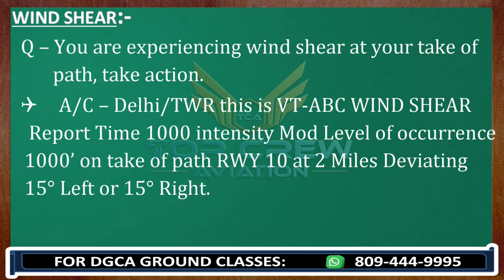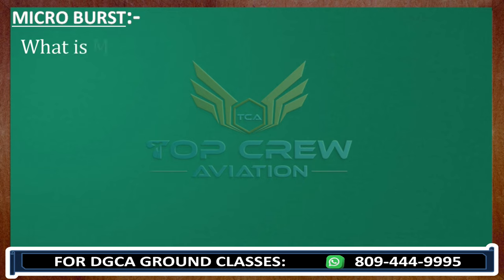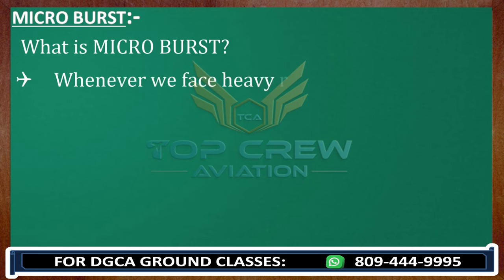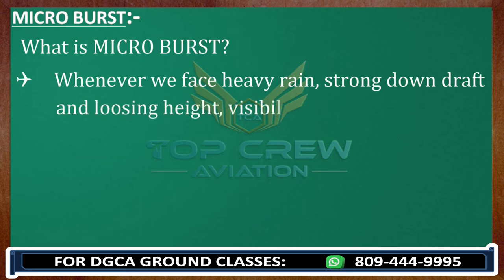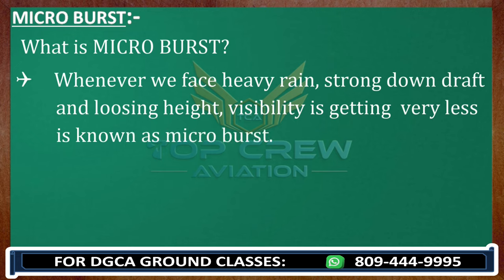Now let's understand microburst. When we face a microburst, there is heavy rain, strong downdraft, and we lose height suddenly. Visibility can reduce to as little as 100 to 200 metres — very dangerous. The procedure is similar to wind shear: on approach, initiate missed approach; on takeoff, deviate left or right accordingly.